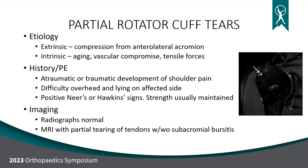Partial rotator cuff tears: the same factors that create impingement create partial tears. Compression from the acromion typically results in a bursal-sided tear, while vascular issues and aging can result in bursal-sided or articular-sided tears. Sometimes trauma creates a partial tear, but often it is atraumatic. The same symptoms and physical exam findings apply. X-rays are typically normal, and MRI will show the partial tear — a small gap or white dot at the insertion site on the tuberosity, while the vast majority of the tendon is still intact.